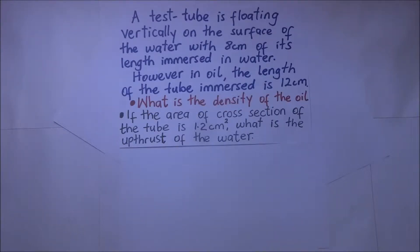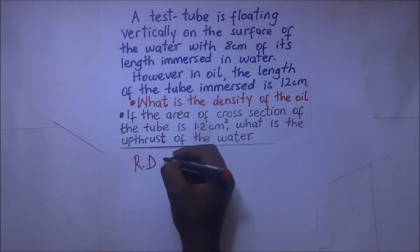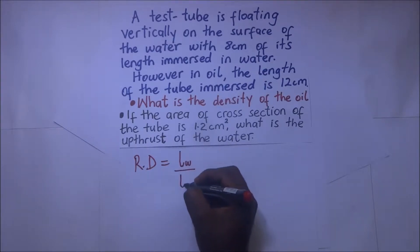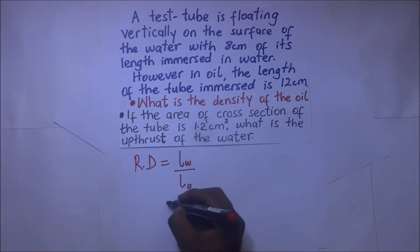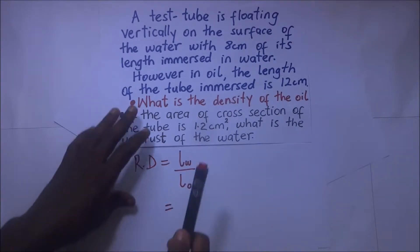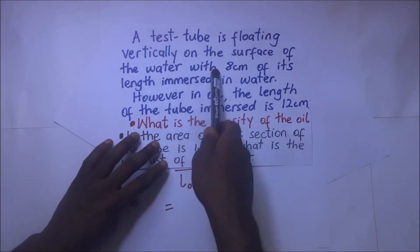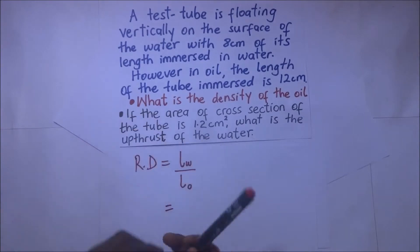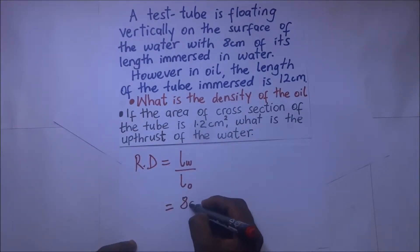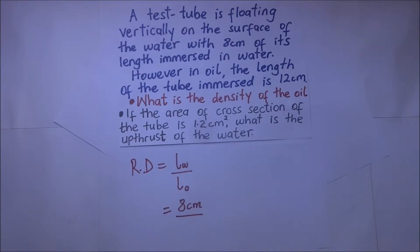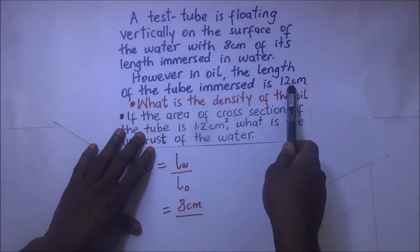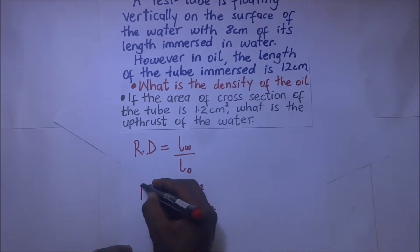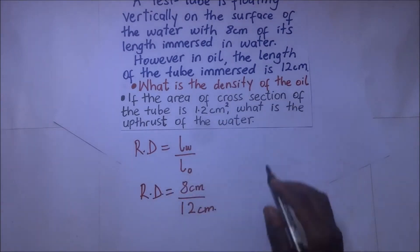To start off, the relative density is given by the length that was immersed when in water divided by the length that was immersed when in oil. The question tells us the test tube has 8 centimeters immersed in water, divided by 12 centimeters immersed in oil. So relative density equals 8 divided by 12.